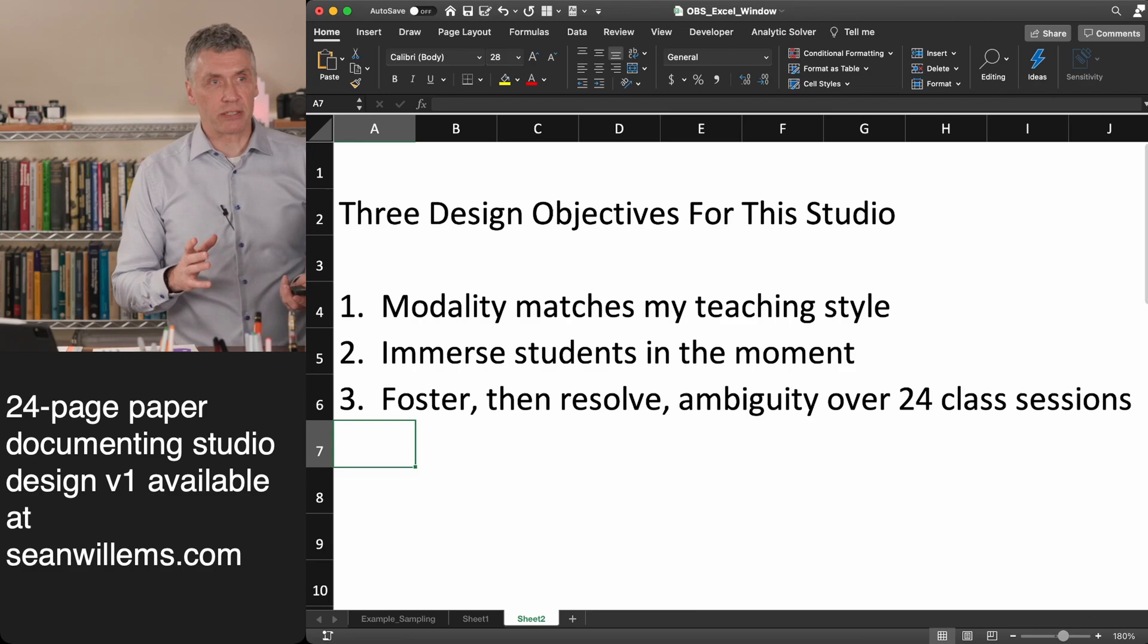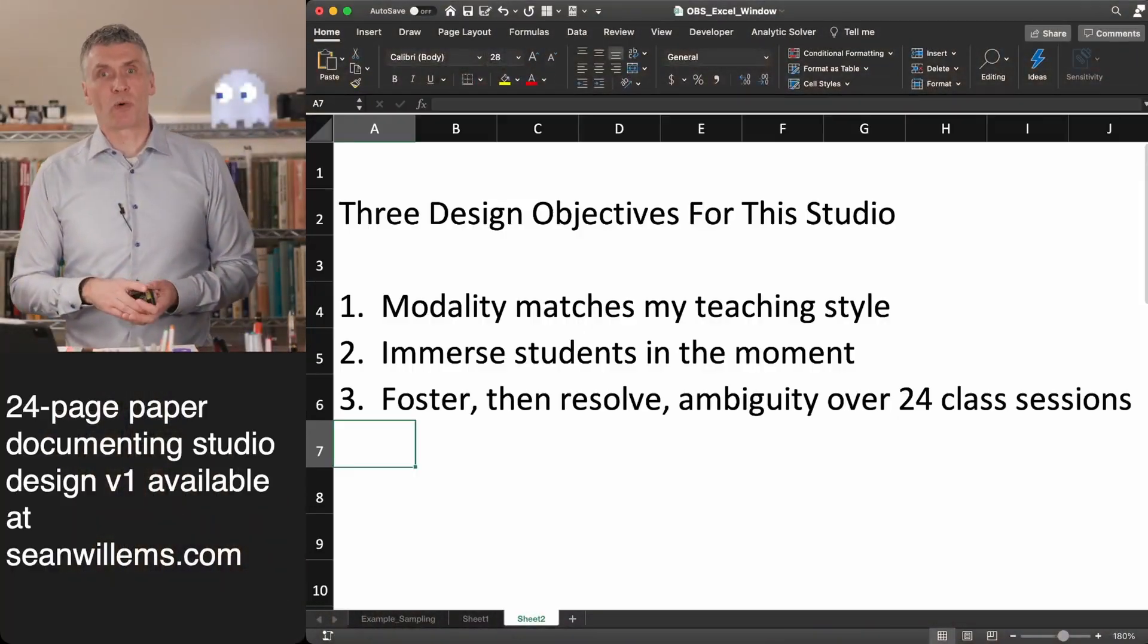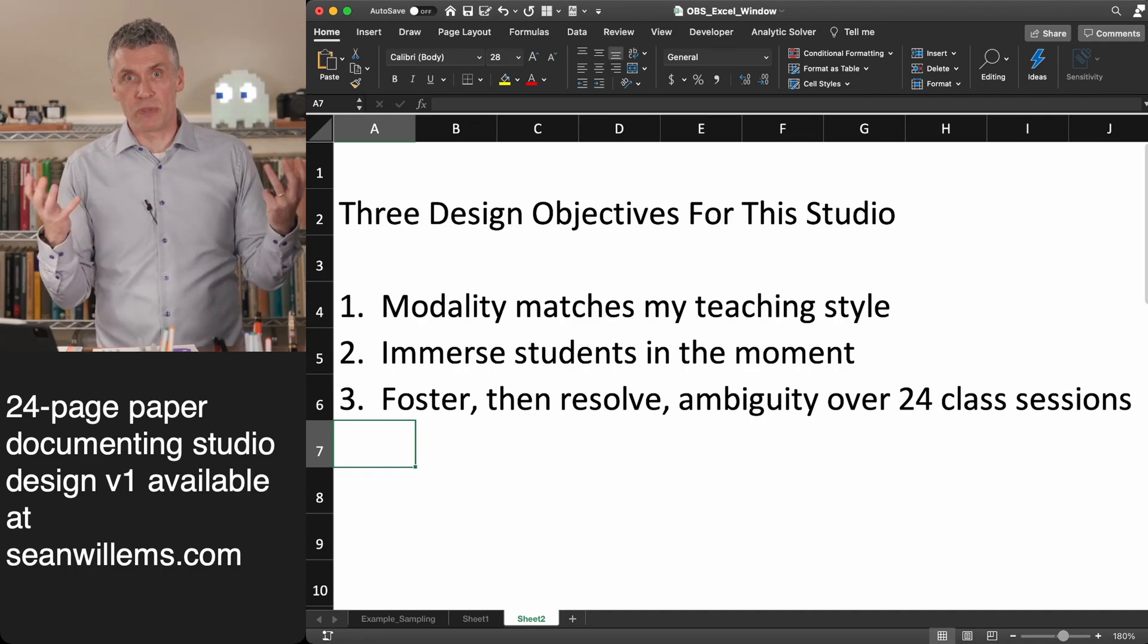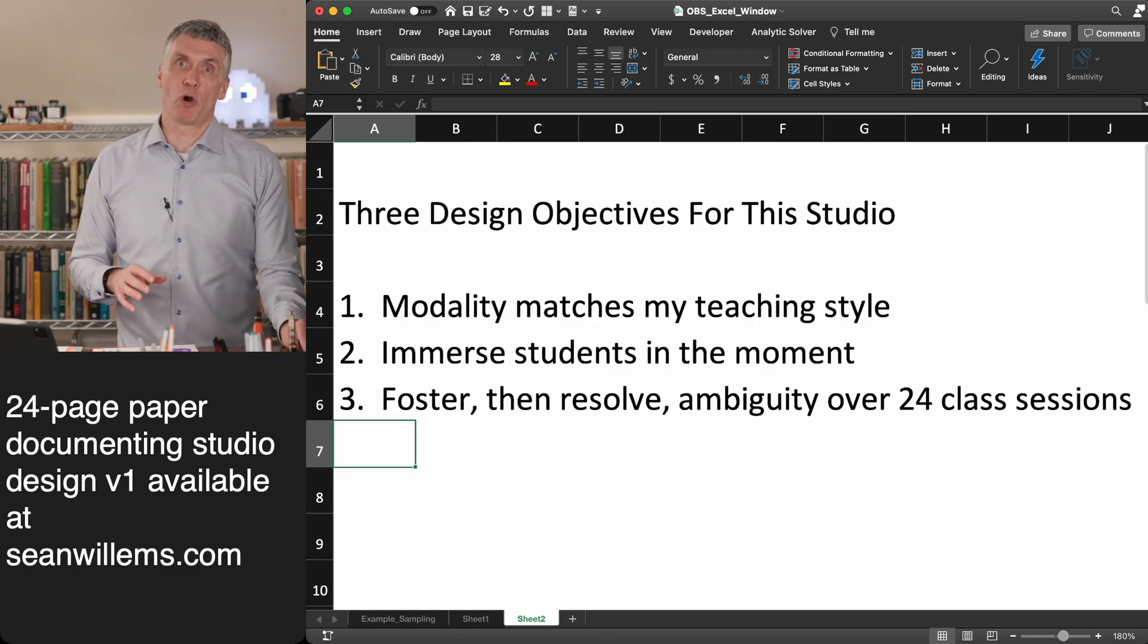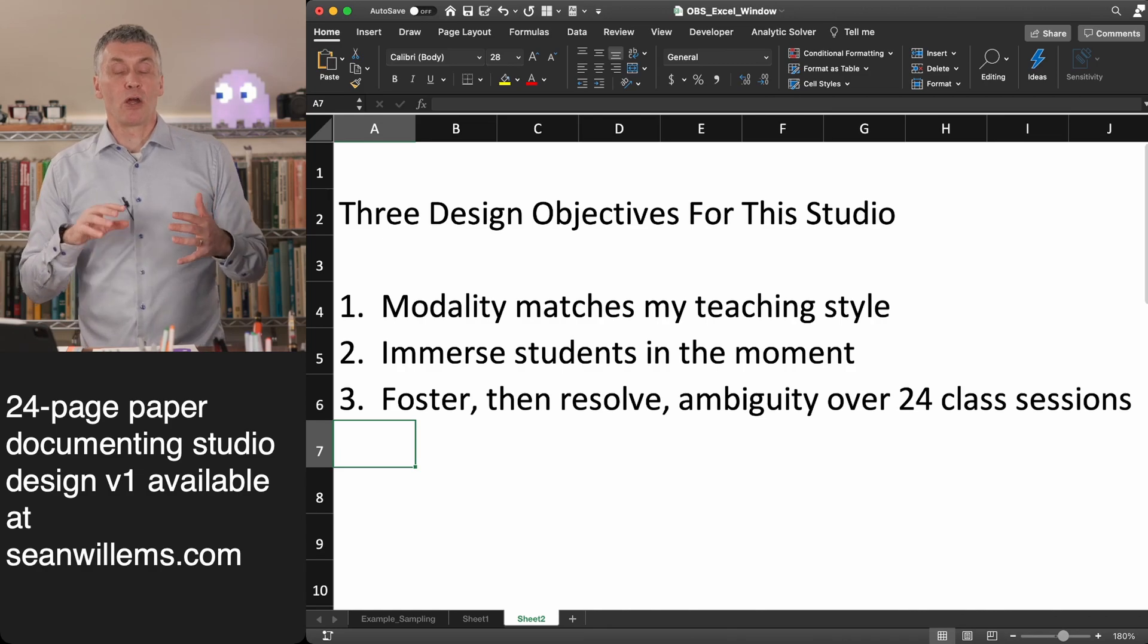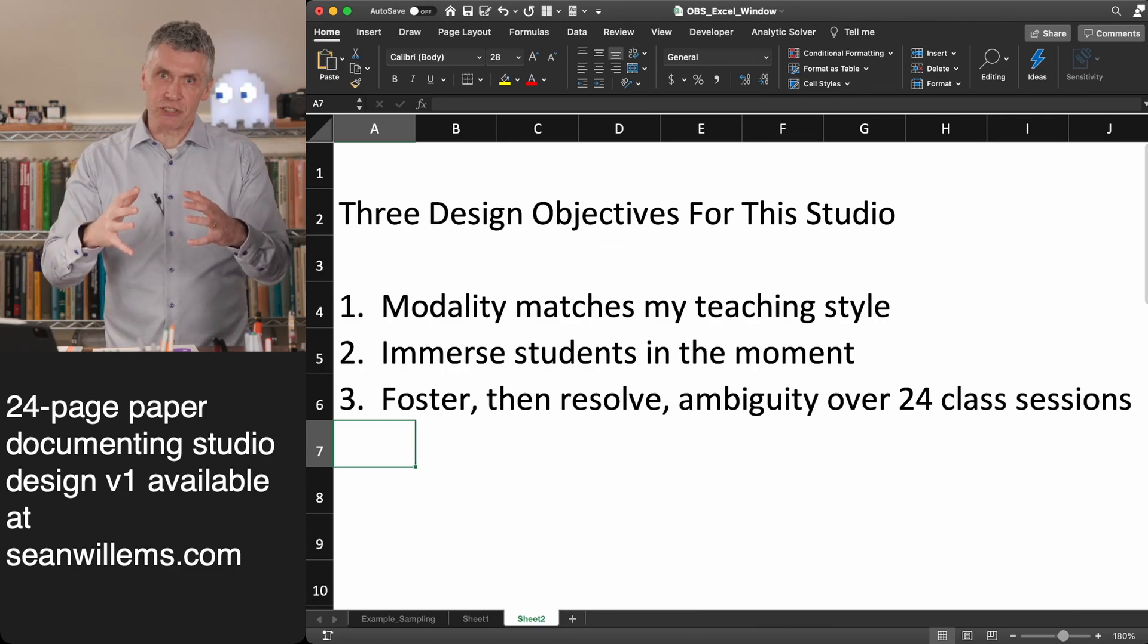And so to do that, I basically had three design objectives that this course had to achieve. So those design objectives were that the modality of the course had to match my teaching style. So I like to move around. I like to show different things. I wanted it to be dynamic. I wanted us to be able to be like we were in the classroom interacting with one another. And so that was my first objective. The second objective is that I wanted to make sure that we allowed students to be immersed in the moment. And this is, I think, so super critical in what I hope the studio design has achieved. But the goal is when we teach on campus, it's easy to immerse students in the moment. First of all, we're the center of attention. We're sort of the ring leader organizing this activity. We have students turn off their phones, close their laptop lids. So if you're there, you're engaged, you're invested.